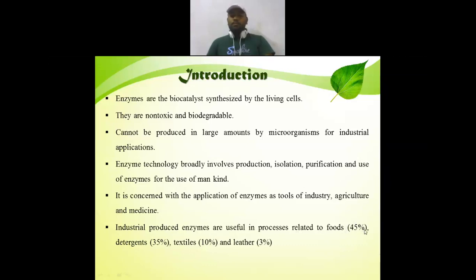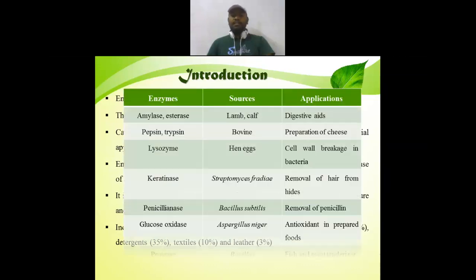You can see here how much percentage of the enzyme is used in various industries. For example, amylases and esterases — these enzymes we get from sources like lamb and crab, and the application of these enzymes is as a digestive aid.